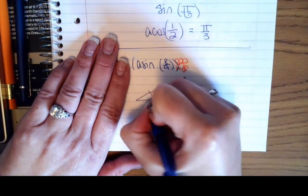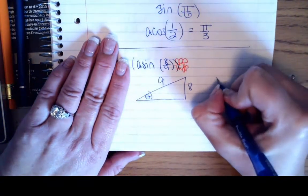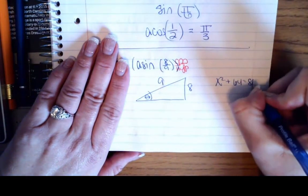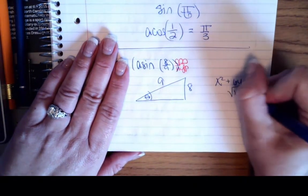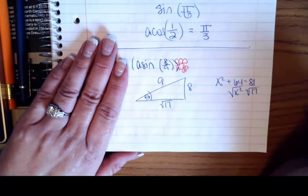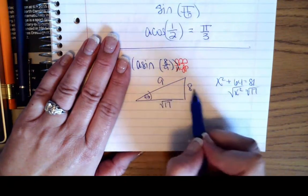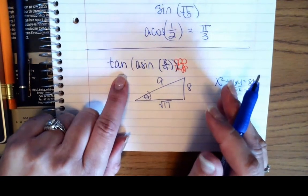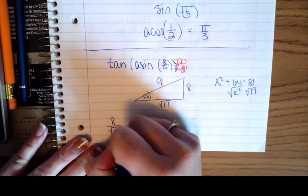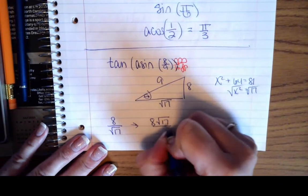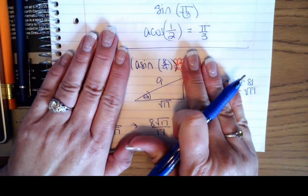My opposite from theta is going to be 8 and my hypotenuse is going to be 9. When I find x, I get x² + 64 = 81, so 81 − 64 = 17. Taking the square root of both sides, this side is √17. I've found the angle — I don't know its exact value, but I found the angle that results in this ratio for sine. Now, tangent is opposite over adjacent, so my tangent is 8 over √17, which rationalizes to 8√17 over 17. Work from the inside out: build your triangle first, then find the resultant ratio.